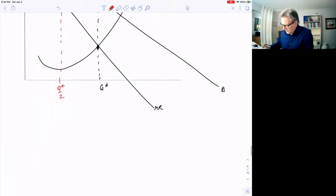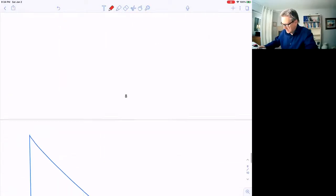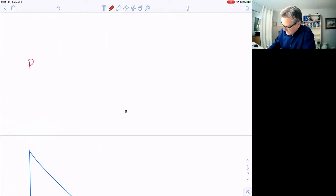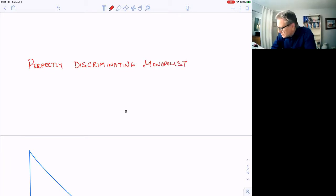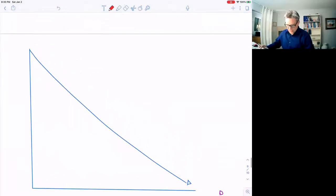Now, there's something called a perfectly discriminating monopolist. That's a monopolist that's able to charge each buyer the price that is the most they would be willing to pay for it.